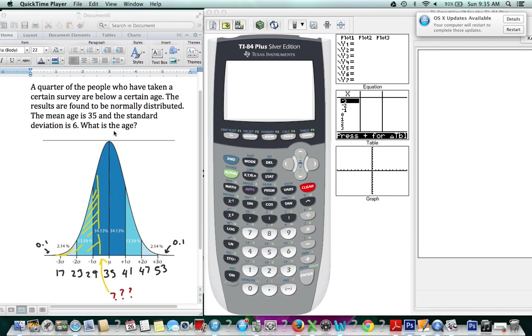And we wanted to see what x-value we could have here that a quarter of the people were below. So a quarter of the people had to be below a certain age here. So normally, we would have taken our values here and worked with the probabilities.